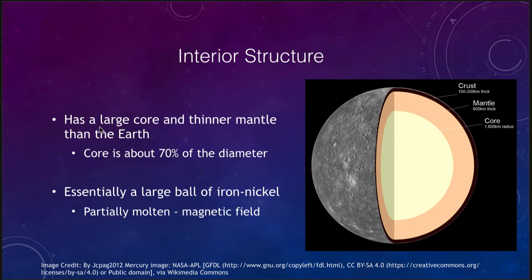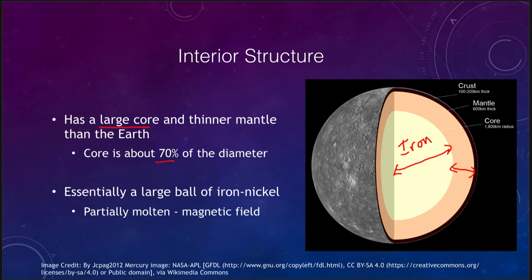What we understand is that Mercury has a very large core — a very big chunk of the interior. It has a much smaller mantle compared to the Earth. The Earth has a smaller core and a larger mantle, whereas Mercury has a larger core and a smaller mantle, composed of iron and nickel at the central portion. The core is actually about 70 percent of the diameter of the planet, so the core dominates Mercury. That's why it has such a high density and such a high concentration of metal — in a way it's a large ball of iron and nickel with a little bit of a rocky crust on top.